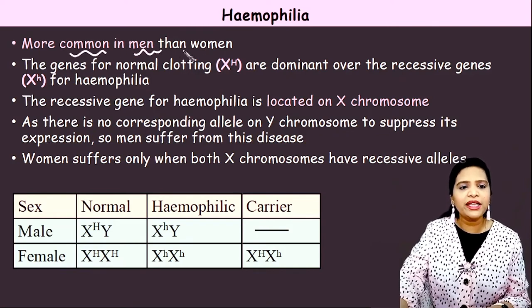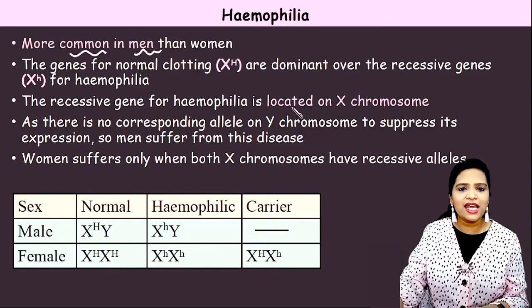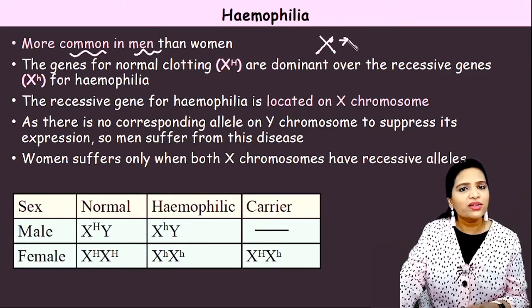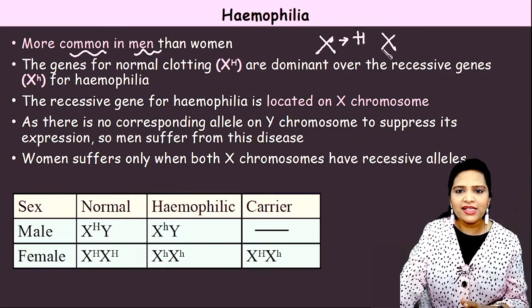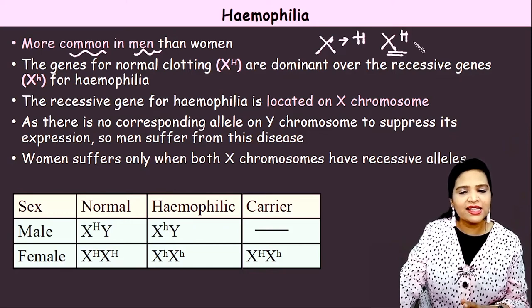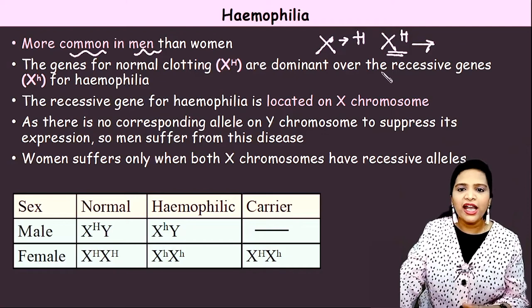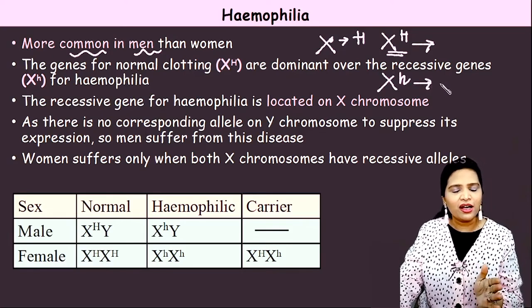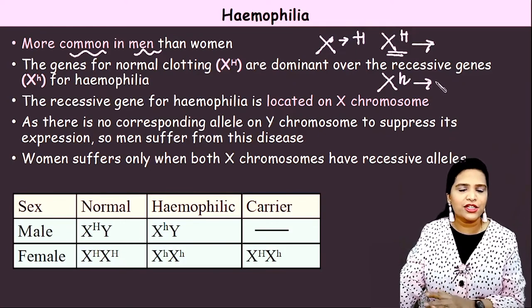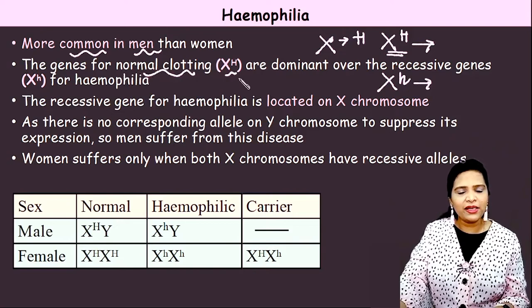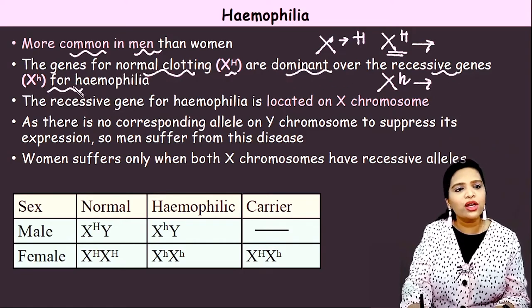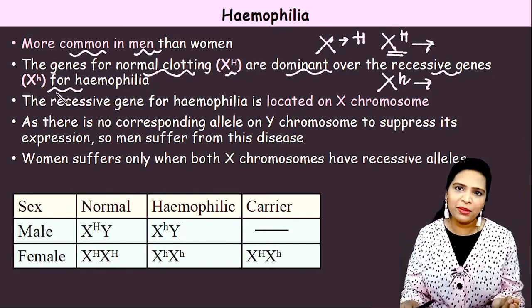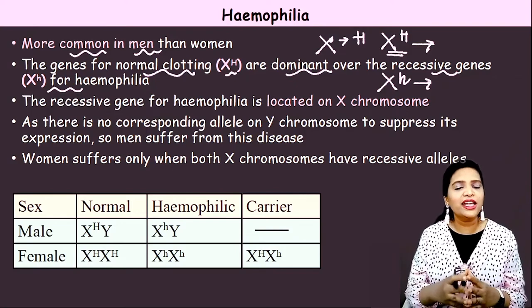Hemophilia is classified into two groups: hemophilia A and hemophilia B, depending on which factor-coding gene is mutated. Hemophilia A occurs due to a defect in the factor 8 gene; hemophilia B occurs due to a defect in the factor 9 gene. The gene for hemophilia is present only on the X chromosome, denoted as capital H (dominant, normal) or small h (recessive, defective). Since males have only one X chromosome, if that gene is deficient, it results in the disease.